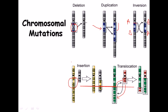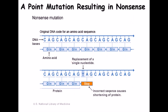Those are the chromosomal-level changes — deletion, duplication, inversion, insertion, and translocation — which are straightforward to understand. Mutations at the gene or DNA level are a little more complicated. There are two types: point mutation and frameshift mutation. A point mutation occurs at a single nucleotide level — for example, a C in the DNA sequence is replaced with a T.